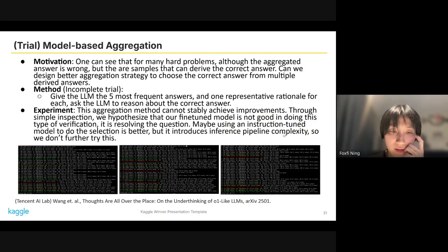That is, we give several answer choices we get from the multiple samples and their corresponding rationales to the LM, and let the LM verify each one and choose the best one. In our preliminary experiments, this aggregation method cannot stably achieve improvements. Through simple inspection, we hypothesized that our fine-tuned model is not good at doing this type of verification. It is resolving the question in most of the time, so it is not following the instruction that you need to verify the logic of each answer. Maybe using an instruction-tuned model instead of a reasoning model to do the selection will be better. But using multiple models will cause additional complexity for the inference pipeline, so we didn't further try this.